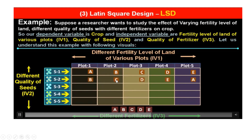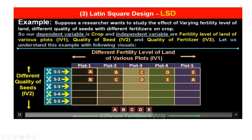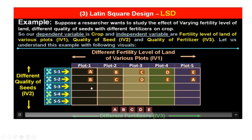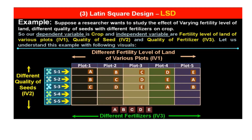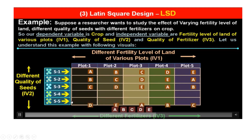Next we will use fertilizers B, C, D, E, and A in plots 1, 2, 3, 4, and 5 respectively. Then the next combination is C, D, E, A, and B in the same way. This repetition ensures no fertilizer is repeated in any given plot position, following the Latin square principle.